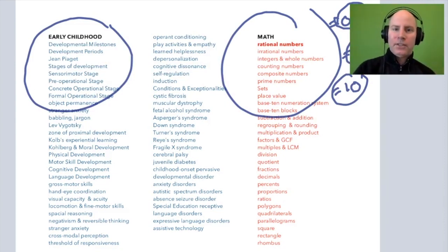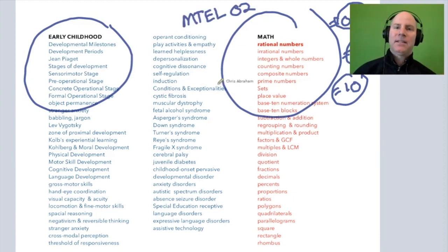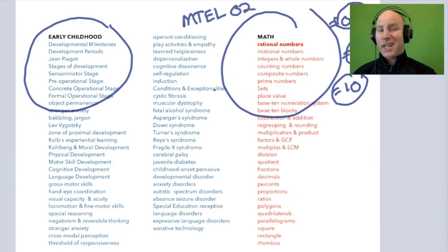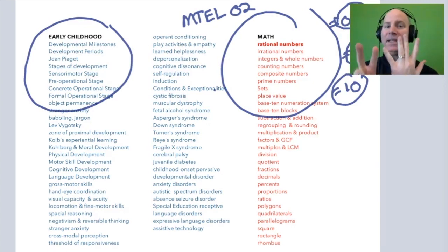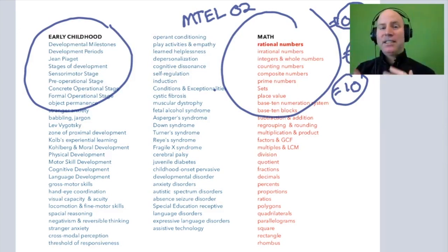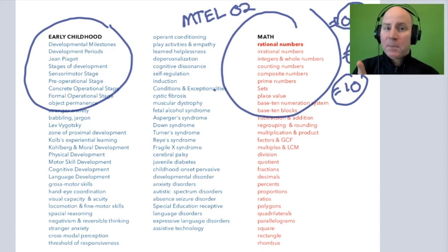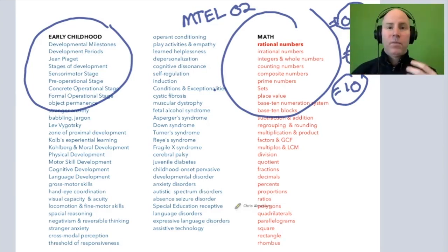Whereas an early childhood exam like the MTEL 02 is an exam that has a little bit of everything. It has early childhood, special education, children's literature, early literacy, math, science, English, history questions, geography questions, and two essays which incorporate lesson planning. Lots of moving parts here.